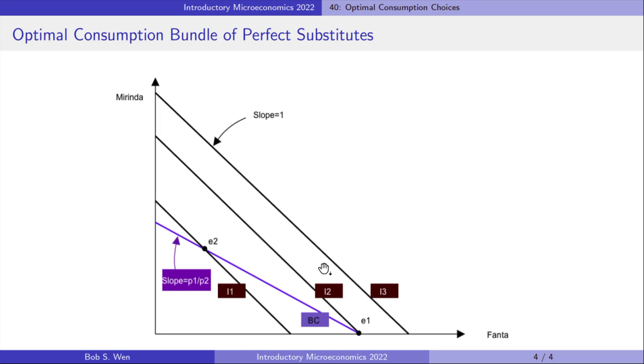Suppose Fanta is less expensive than Marinda. The budget line is flatter than the indifference curves. Where is the optimal consumption bundle?